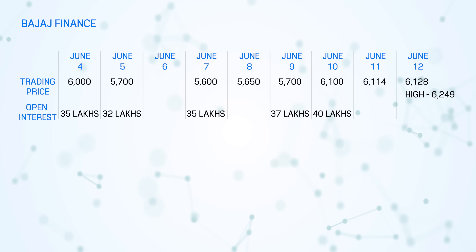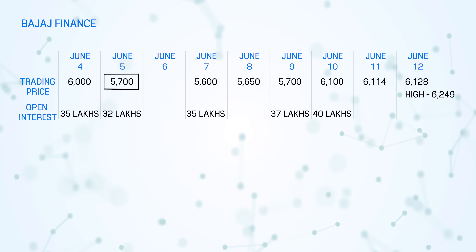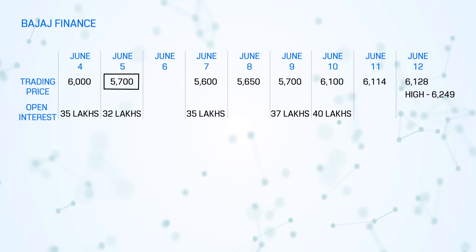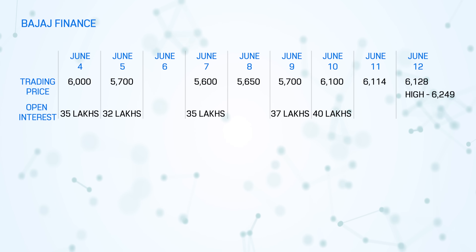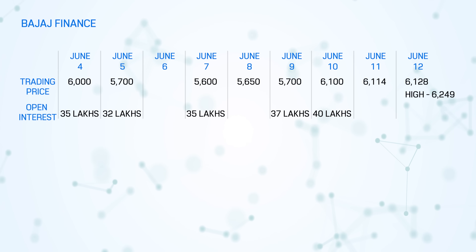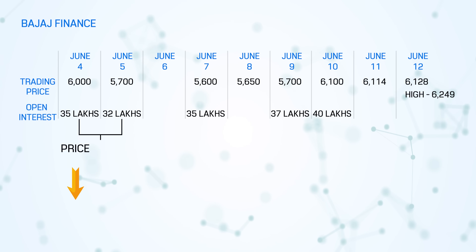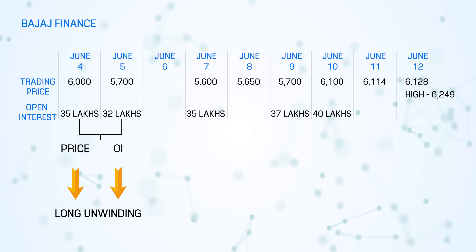Looking at Bajaj Finance: on 4th of June, it was trading around 6,000 rupees. The next day it fell nearly 5%, going down to 5,700. While the market fell, what happened to the open interest? Open interest actually decreased. So when the price comes down and open interest also comes down, it means people holding long positions are squaring up. The market may not continue to fall — this is called long unwinding. The price may stabilize or even recover.